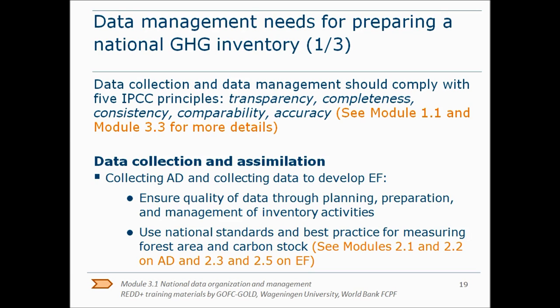The estimation and reporting of greenhouse gases under the UNFCCC should comply with the five general reporting principles from the IPCC. Therefore, these five principles should also be taken into account when collecting and managing data. What are the data management needs for preparing a national greenhouse gas inventory? First, there are some aspects related to data collection and assimilation that need to be taken into account. It is very important to ensure the quality of the data in each phase of the inventory process. Archiving of all relevant data, information, and methods is important. Also, explanations for the selection of data, methods, and procedures is essential in order to ensure transparency and to be able to respond to requests for clarification of information on the national inventory.